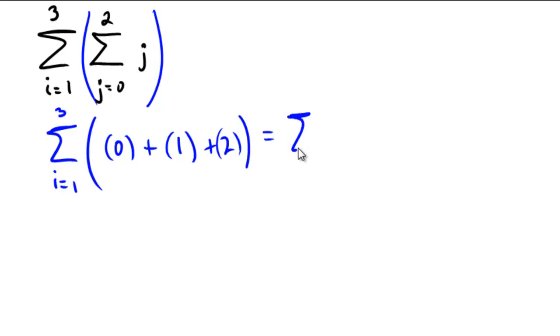So this is going to be equal to the sum i equals 1 to 3, and 0 plus 1 plus 2 is just the number 3.